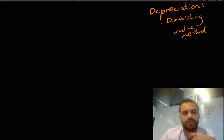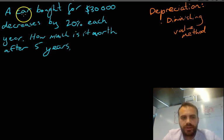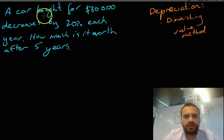Let's take a look at a question that it would be like so you can see what it looks like. So here's the question. A car bought for $30,000 decreases by 20% each year. How much is it worth after five years?